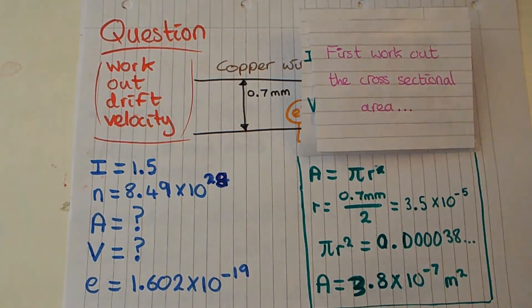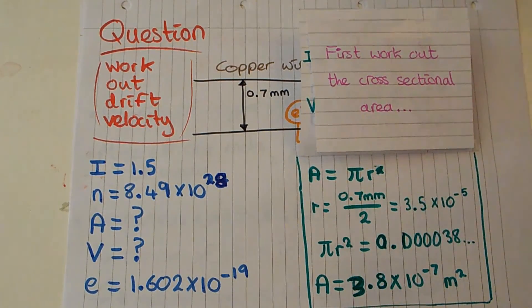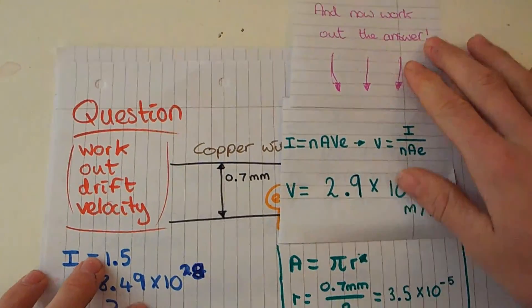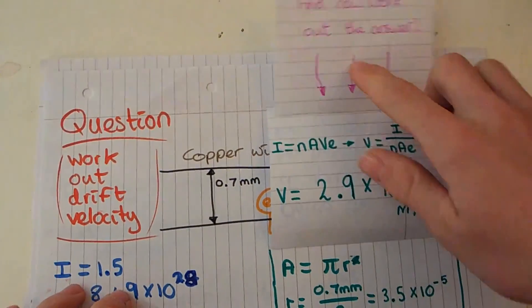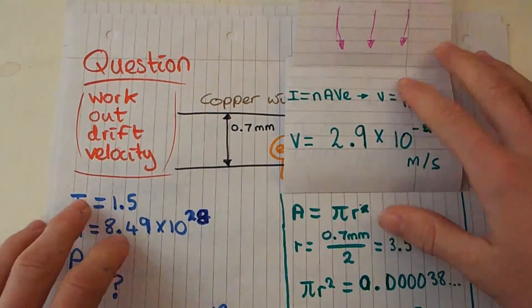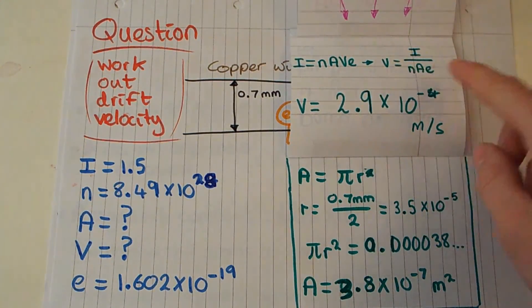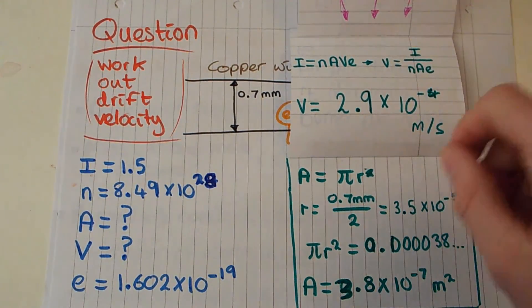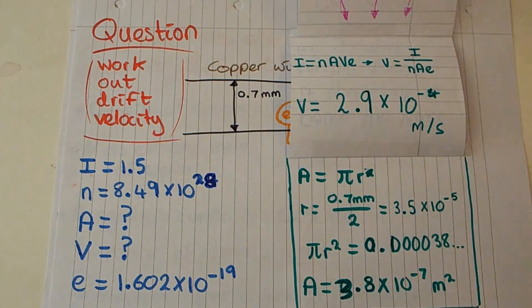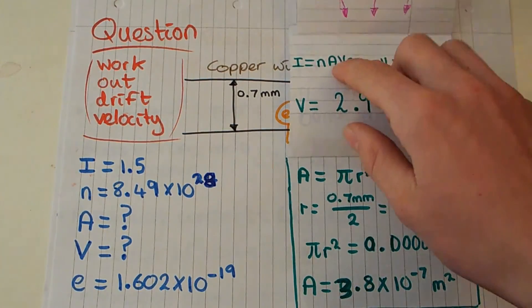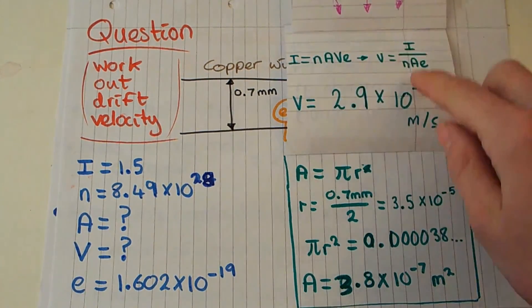So now we've got all of the things we need to plug into the equation. We've got I equals nAve, we can rearrange that to v equals I over nAe. The way we do that is we simply divide both sides of the equation by nAe so then we've just left with v equals I divided by nAe.